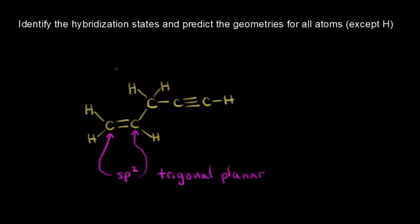Let's move to this carbon right here. That carbon has only single bonds around it. The fast way of doing it is if you see all single bonds, it must be sp3 hybridized. If that carbon is sp3 hybridized, we know the geometry is tetrahedral, with ideal bond angles of 109.5 degrees around that carbon.